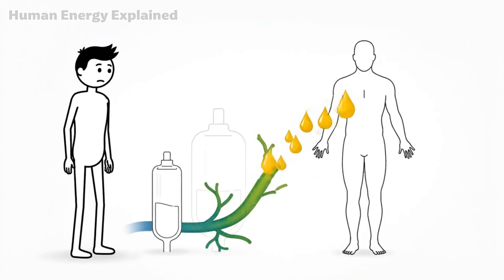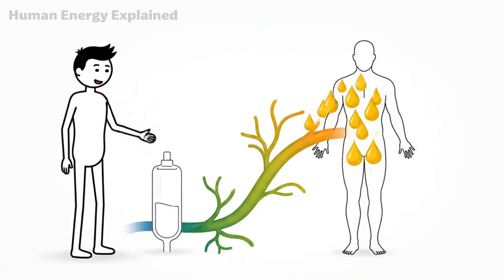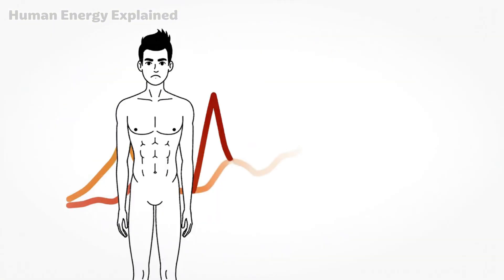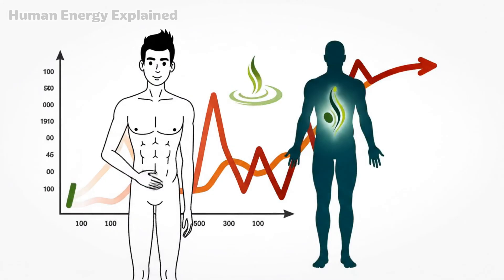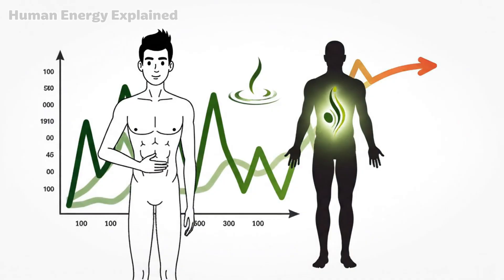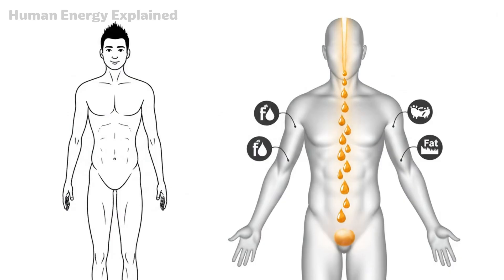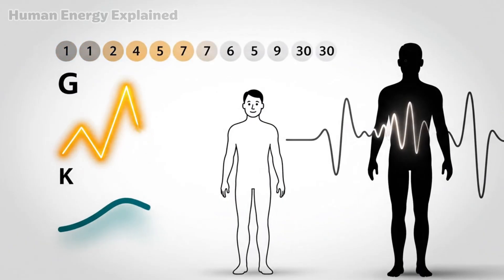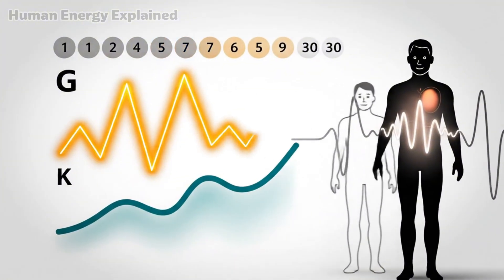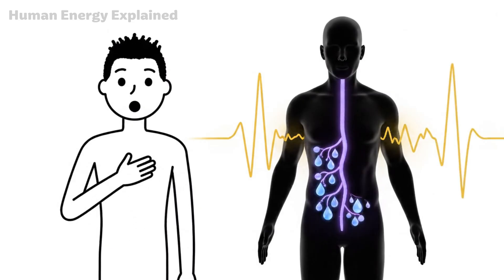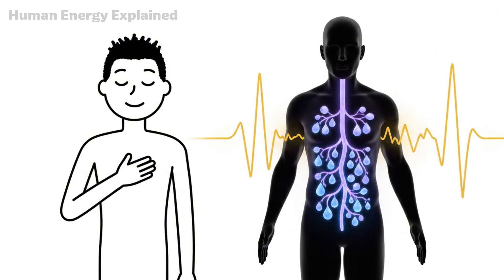OMAD forces your body to finally access that larger reserve. And once it does, everything changes. Your energy starts to stabilize. The wild swings of blood sugar, the crashes that made you reach for snacks, begin to fade. Your body is now running on a steadier, more consistent fuel source. Ketones don't spike and crash like glucose does. They provide a calm, sustained energy that many people describe as completely different from anything they've felt before.